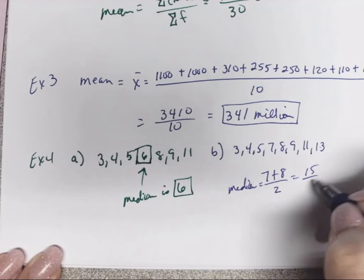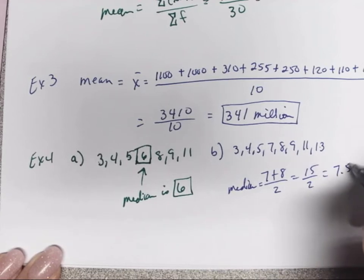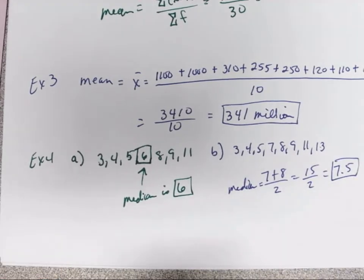We have to take the 7 plus 8 and divide by two to find our median. That will get us 15 divided by 2, which will be 7.5, and that will be our median in this case.